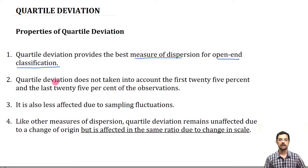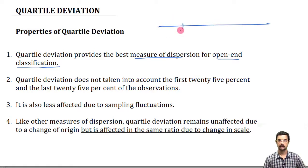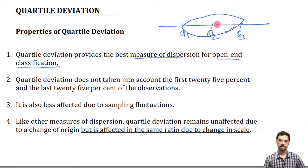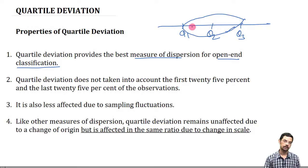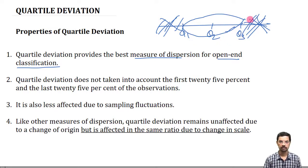The second property says that quartile deviation does not take into account the first 25% and the last 25% of the observations. If this is the data, we have Q1, Q2, and Q3 marked. Only the middle 50% of data is used in the case of quartile deviation. It is also less affected due to sampling fluctuations.